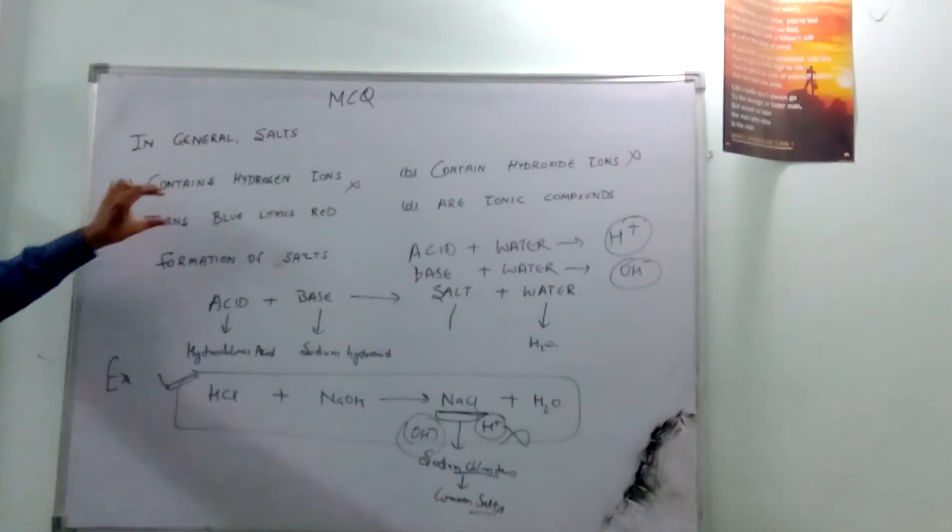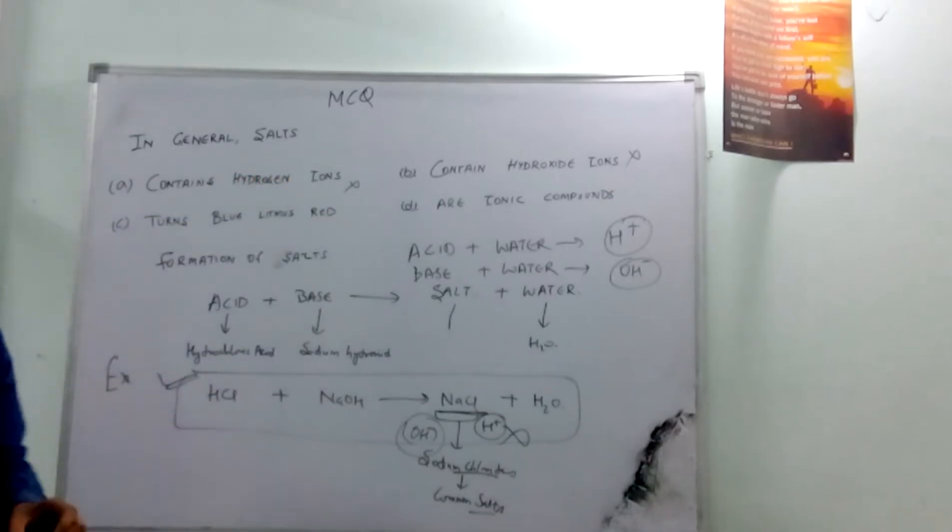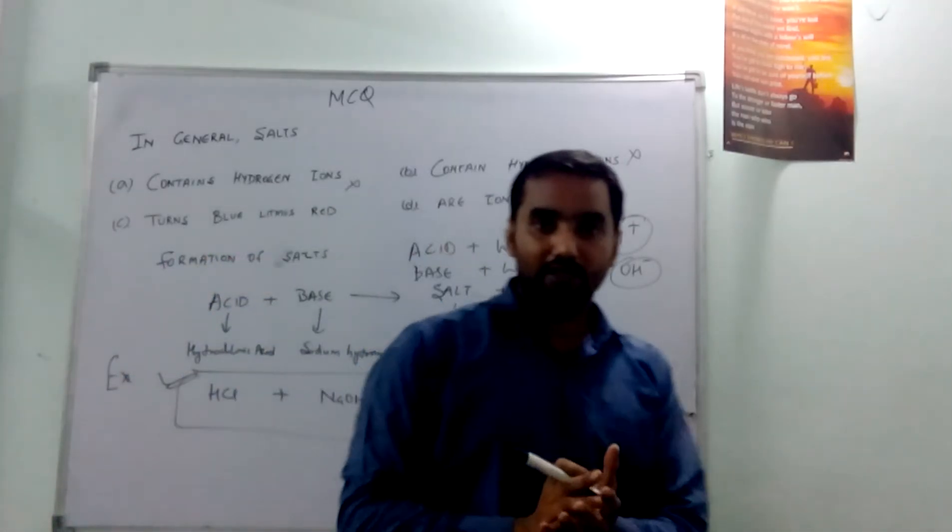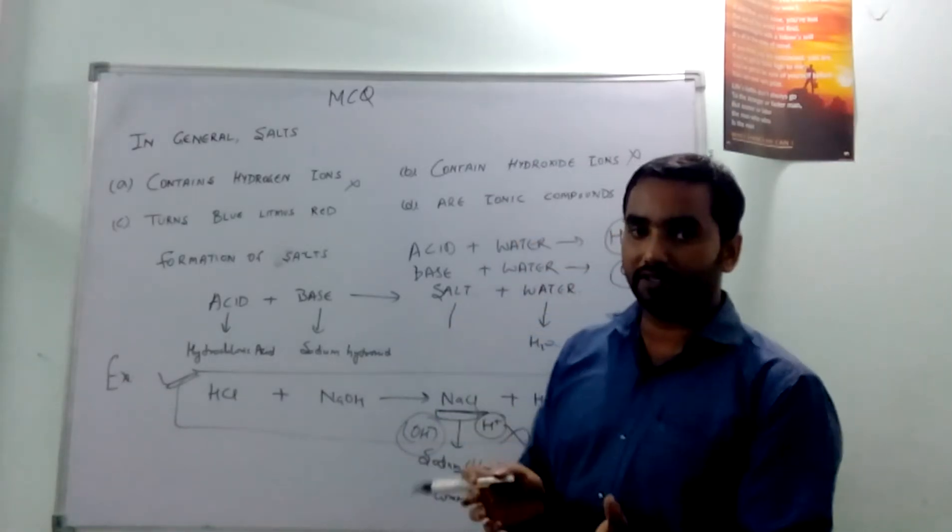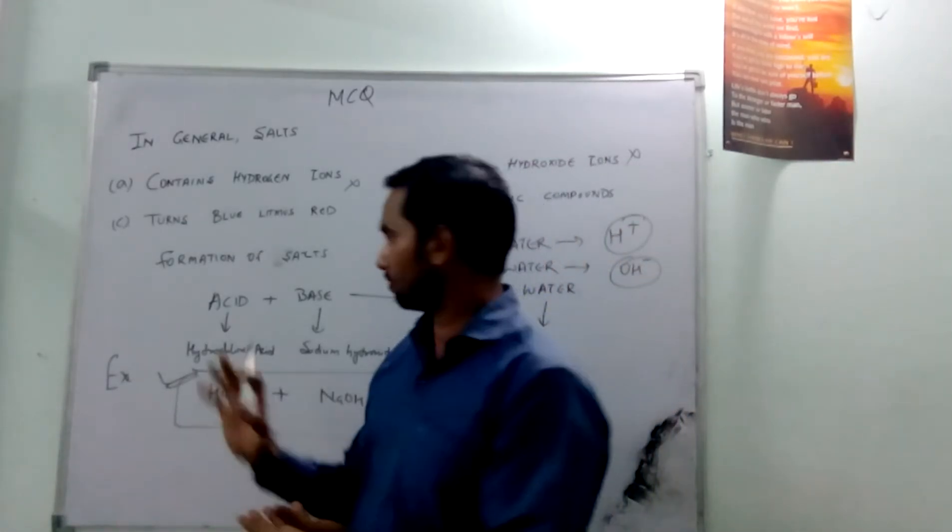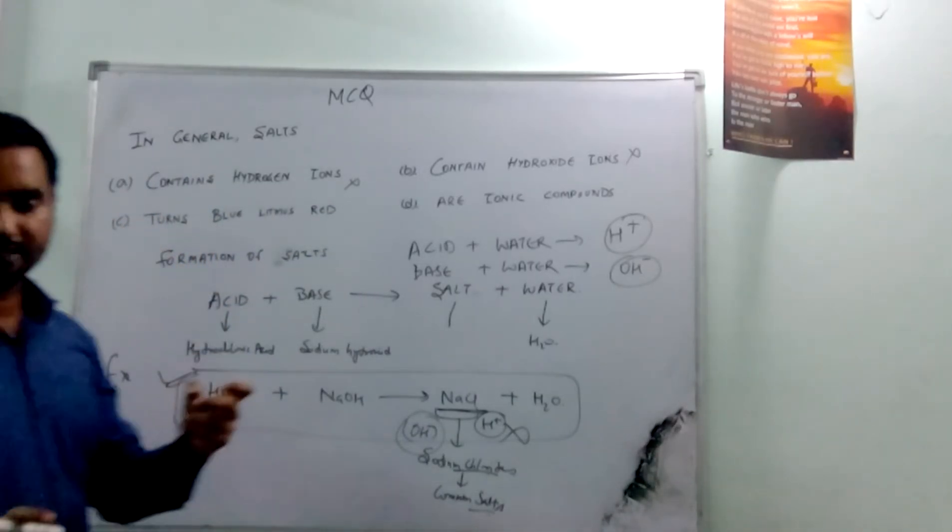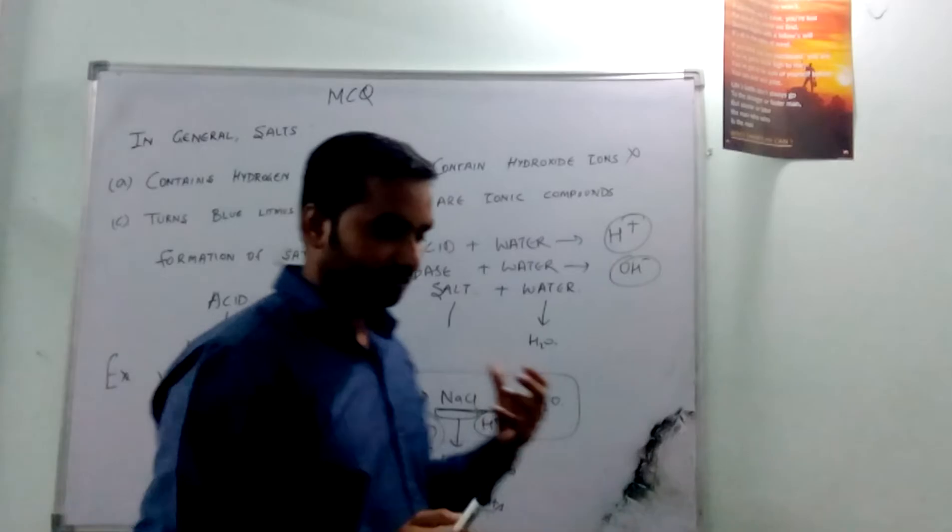So in general, salt does not contain even hydroxide ion. Third is turns blue litmus to red. When litmus paper is concerned, neutral compounds never turn any color to anyone, not blue to red, not red to blue.